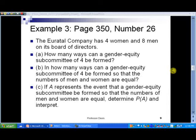So in example three, we can see how we can use this idea of combinations to compute classical probability. It reads, the Uradal Company has four women and eight men on its board of directors.